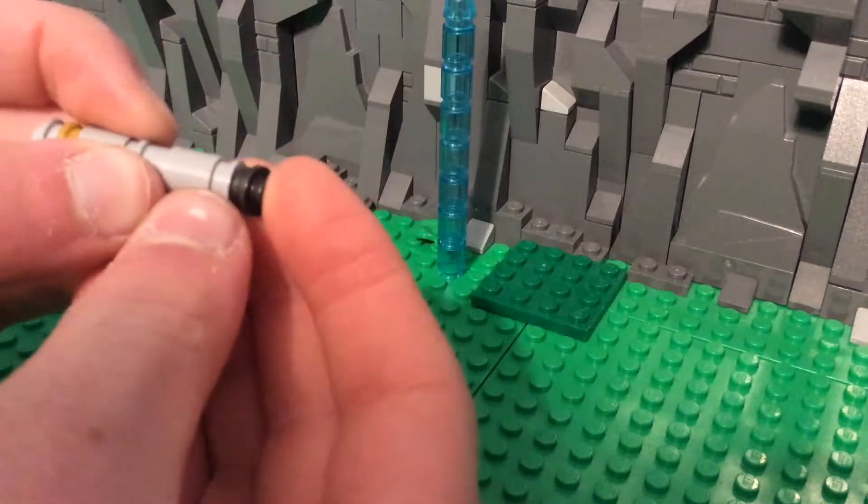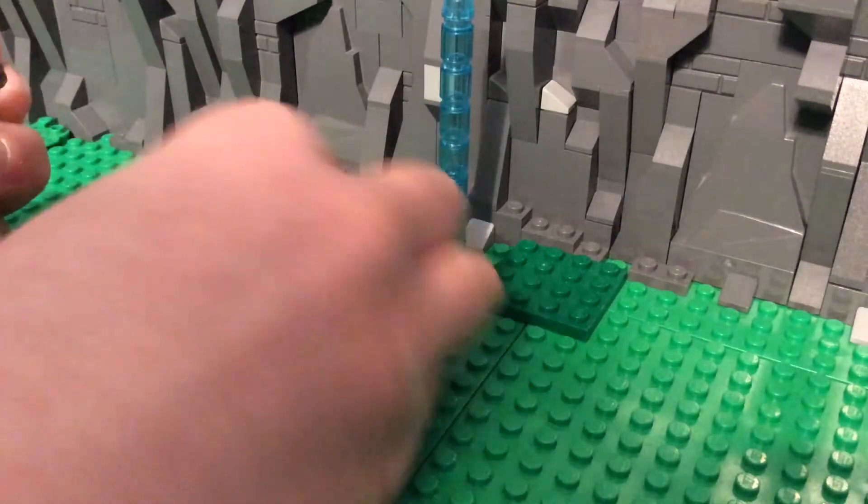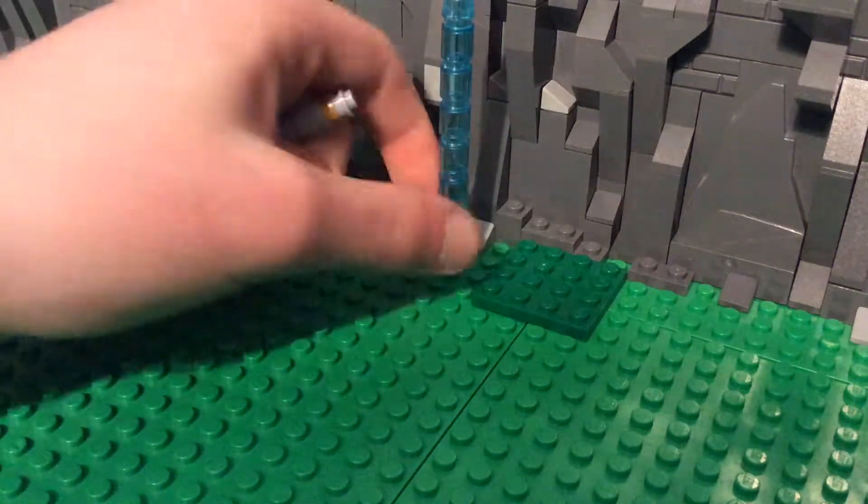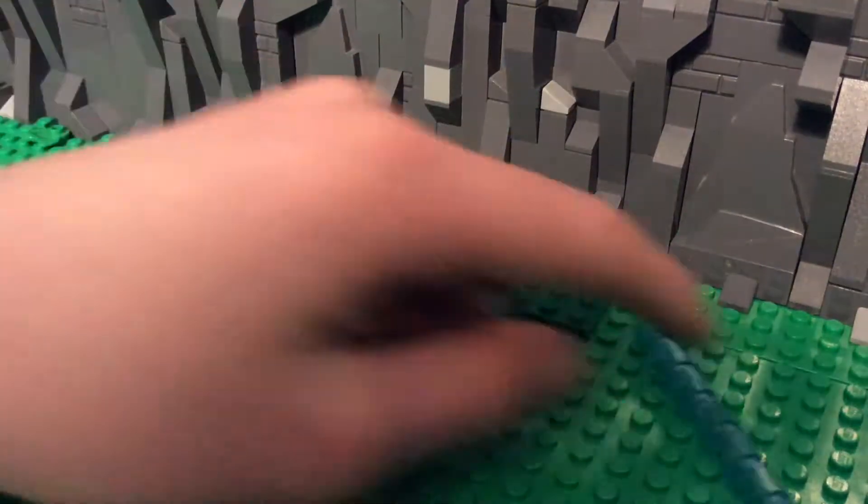And then we get this black metallic black piece on there and then we top it off with a smoothed one by one circular plate.